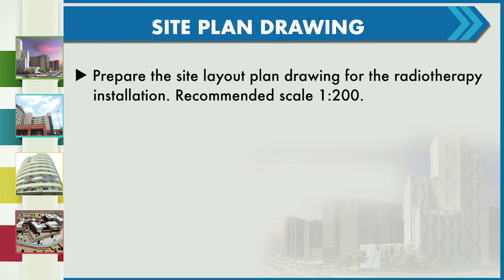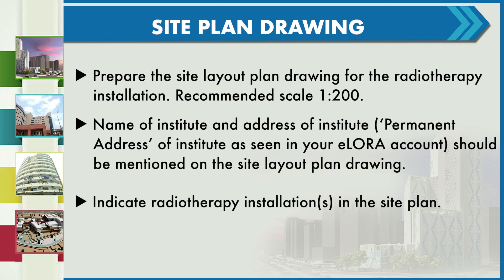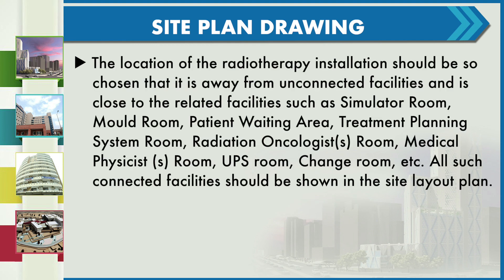For the site plan drawing, we need to prepare the site layout plan drawing for the radiotherapy installation at a recommended scale of 1:200. The name and permanent address of the institute as seen in the e-LORA account should be mentioned on the drawing. We need to indicate the radiotherapy installations, and the location should be chosen so that it is away from unconnected facilities and close to related facilities such as the simulator room, mold room, patient waiting area, treatment planning system rooms, radiation oncologist's room, medical physics room, UPS room, and change room. All such connected facilities should be shown in the site layout plan.